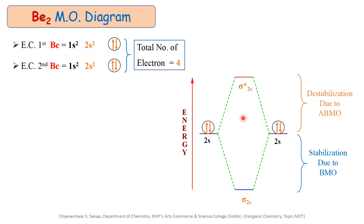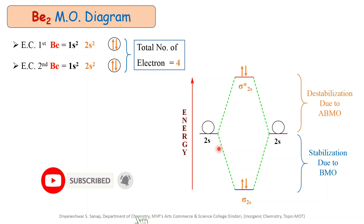Next is the filling of electrons from atomic orbitals into molecular orbitals. Electrons fill in increasing order of energy. There are 4 electrons from the 2 beryllium atoms. The first and second electrons go to the lower energy bonding molecular orbital, completely filling it. Since the bonding orbital is full, the third electron goes to the higher energy anti-bonding molecular orbital, and similarly the fourth electron also goes to the anti-bonding molecular orbital.